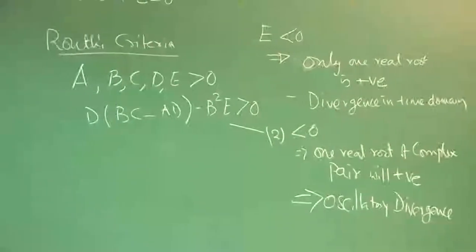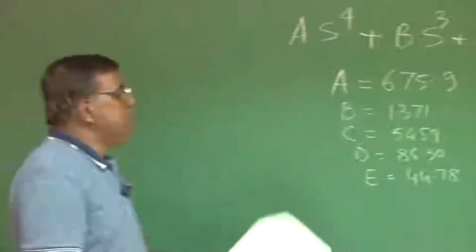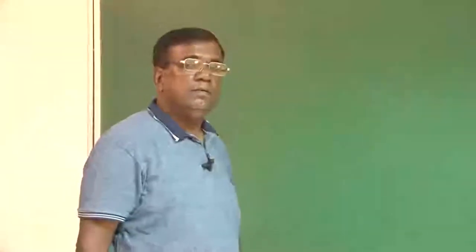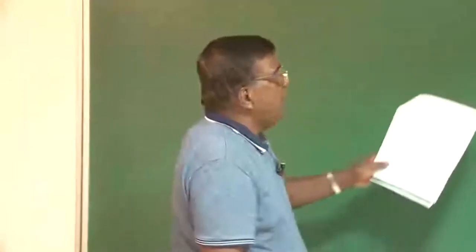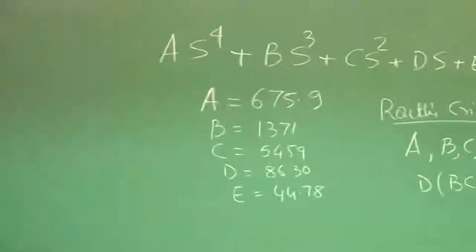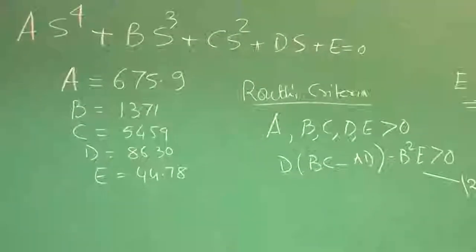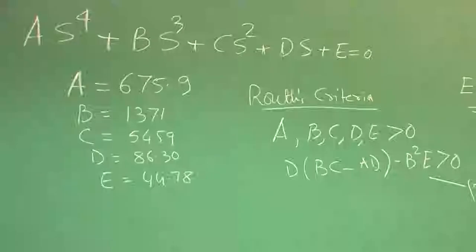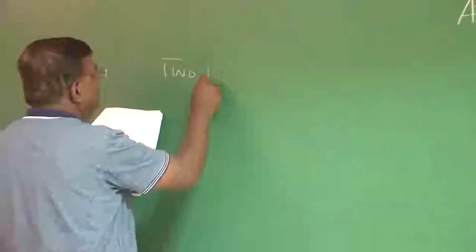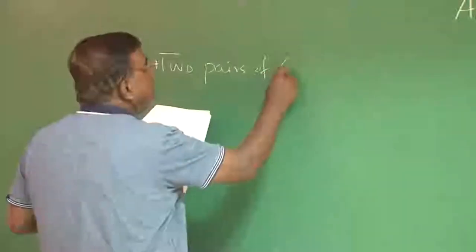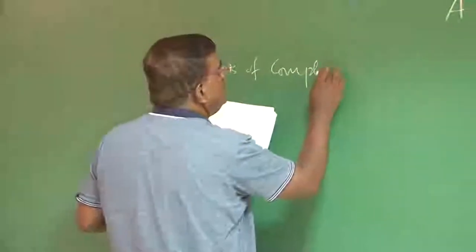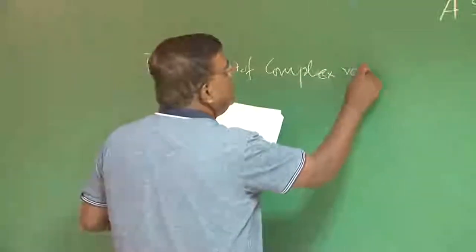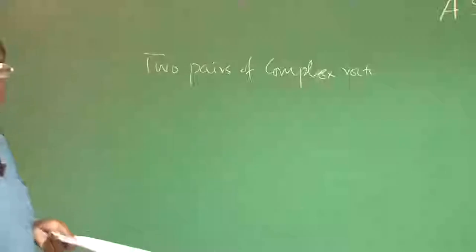We will now use these values, which are generally representative for a business jet type of aircraft. When you solve A·s⁴ + B·s³ + C·s² + D·s + E = 0 by numerical methods, you will find 2 pairs of complex roots — this is generally what you will see.